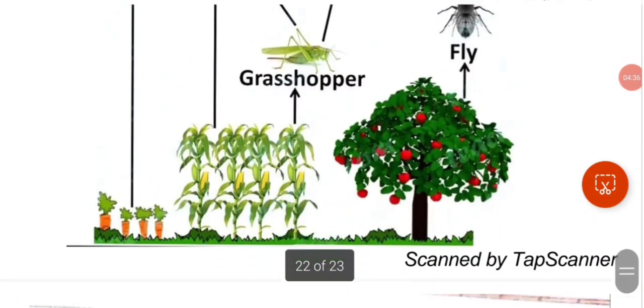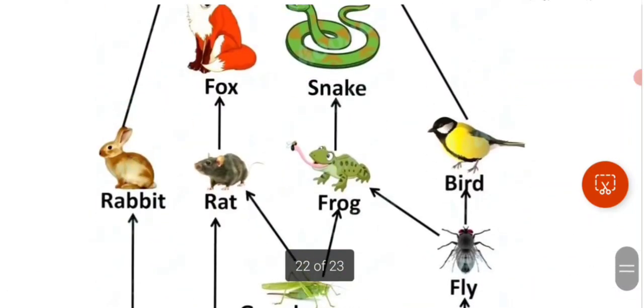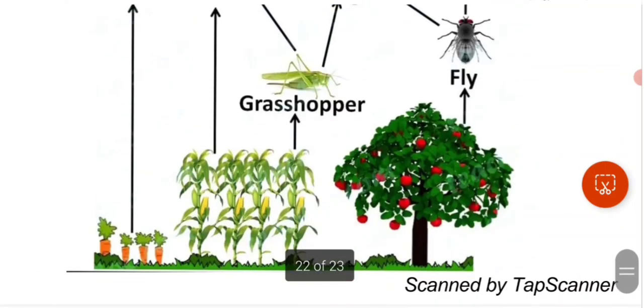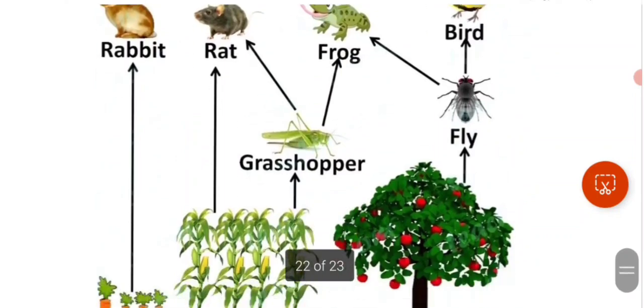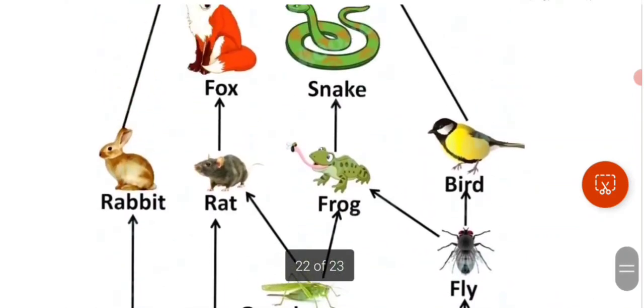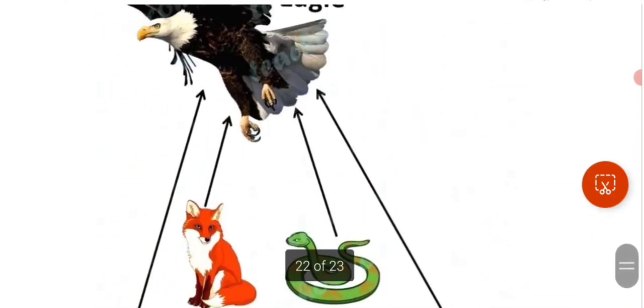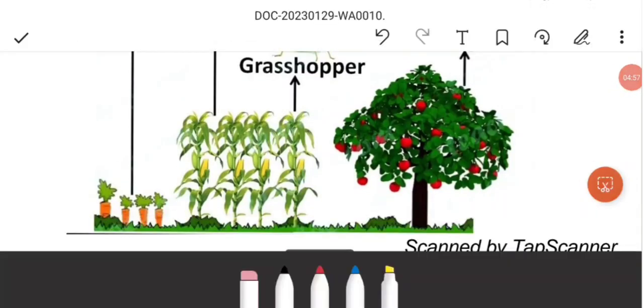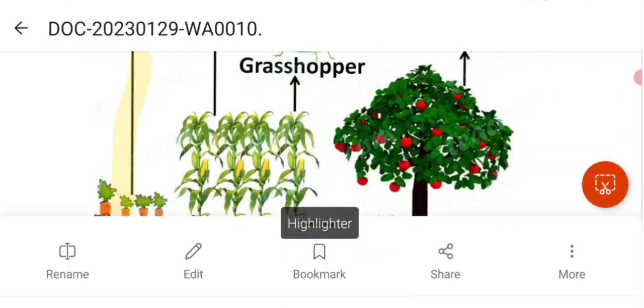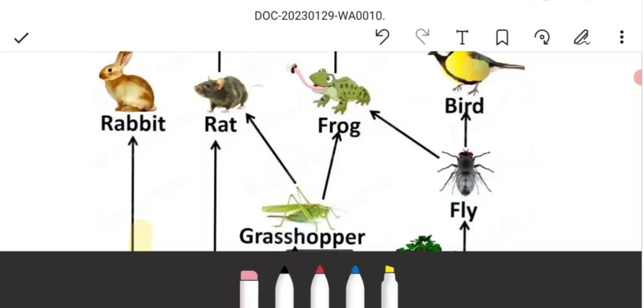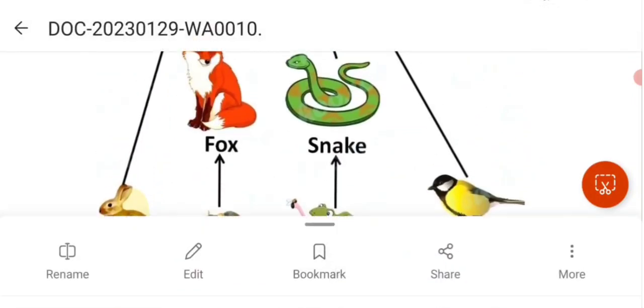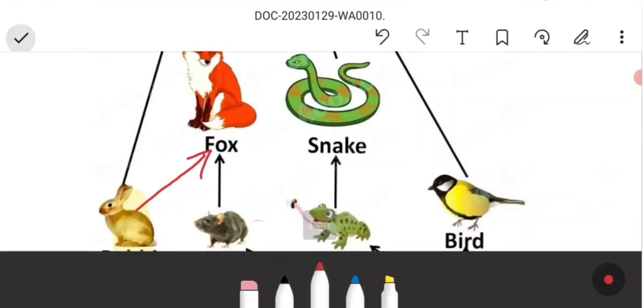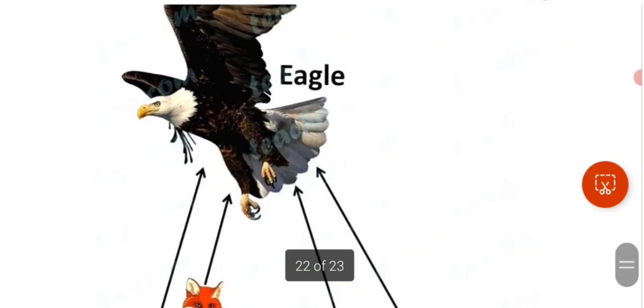For example, here is a food web. You can see many food chains interconnected. Let's see how many food chains there are. The first food chain: carrot is eaten by rabbit, and rabbit is eaten by fox or eagle.